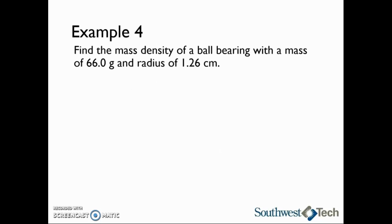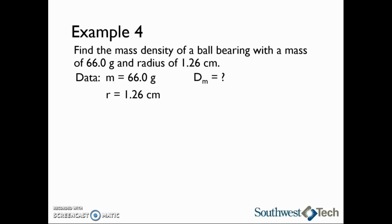Let's take a look at an example of a mass density calculation. Find the mass density of a ball bearing with a mass of 66.0 grams and a radius of 1.26 centimeters. First we will write down everything we know: the mass is 66.0 grams, the radius is 1.26 centimeters, and the mass density d sub m is what we are trying to find. Mass density should have units of kilograms per cubic meter, so we will need to convert either at the beginning or at the end.